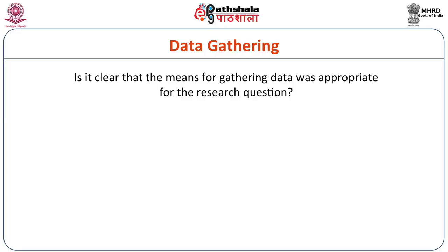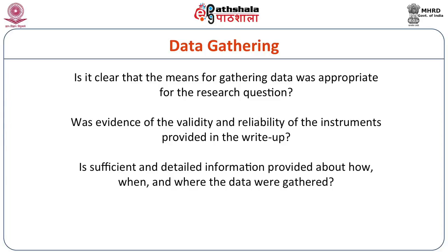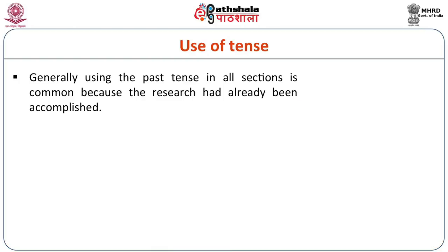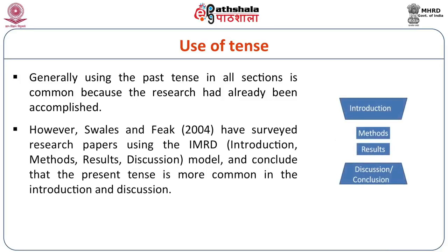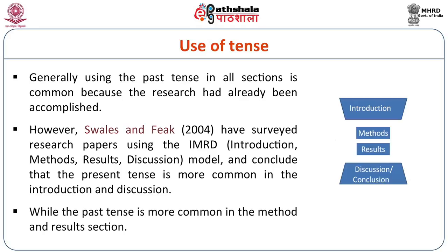Then comes data gathering. It should be clear that the means for gathering data was appropriate for the research questions, and sufficient and detailed information should be provided about how, when, and where the data were gathered. A major problem researchers face is which tense to use. Using the past tense in all sections is common because the research had already been accomplished. However, Swales and Feek surveyed research papers using the IMRD model — introduction, method, result, and discussion — and conclude that the present tense is more common in the introduction and discussion sections, while the past tense is more common in the methods and results sections.